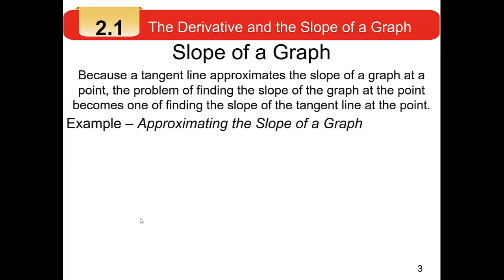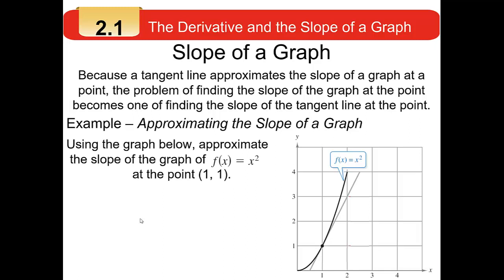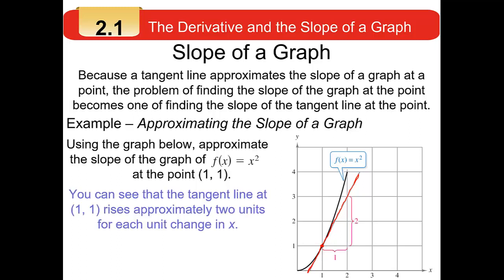Let's work through an example. Suppose we have the function f(x) = x², pictured in the graph on the lower right of the screen. I want to approximate the slope of f(x) = x² at the point (1, 1) by taking the slope of the tangent line — which they've already sketched in gray; I'll go over it in red. To approximate it, you go back to a simple algebra problem: rise over run. The slope of a line is the change in y over the change in x.